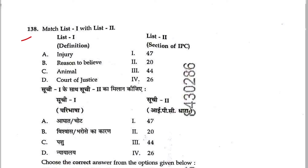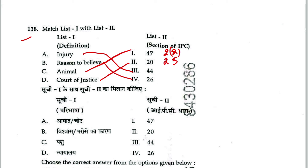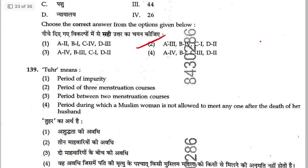Question 138: Match IPC definitions and section numbers. Injury — Section 44 (IPC), now Section 2(14) in BNS. Reason to believe — Section 26 (IPC), now Section 2(29) in BNS. Animal — Section 47 (IPC), now Section 2(2) in BNS. Court of Justice — Section 20 (IPC), now Section 2(5) in BNS. The answer based on BNS section numbers — injury is 2(14). Answer is 2.